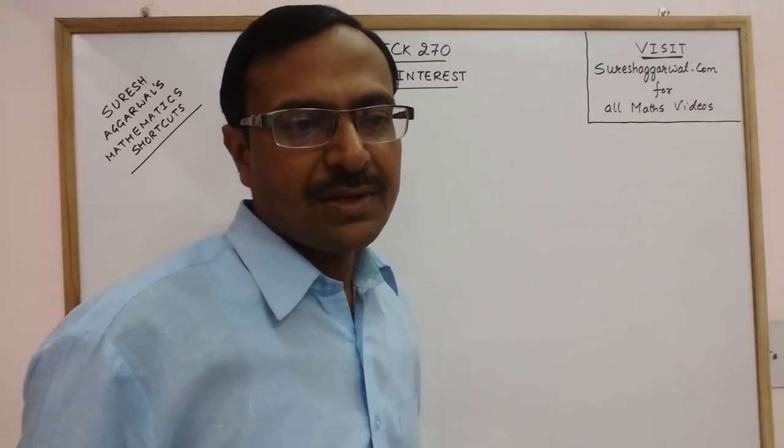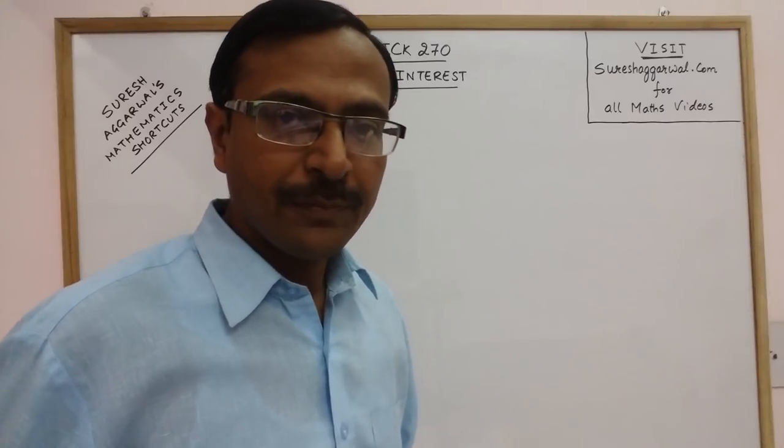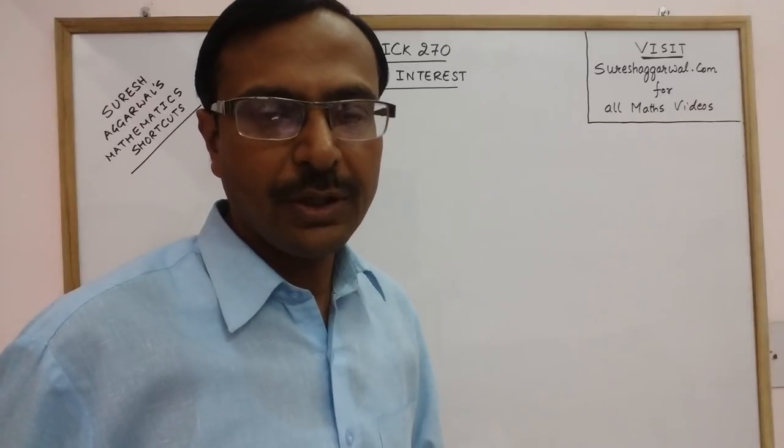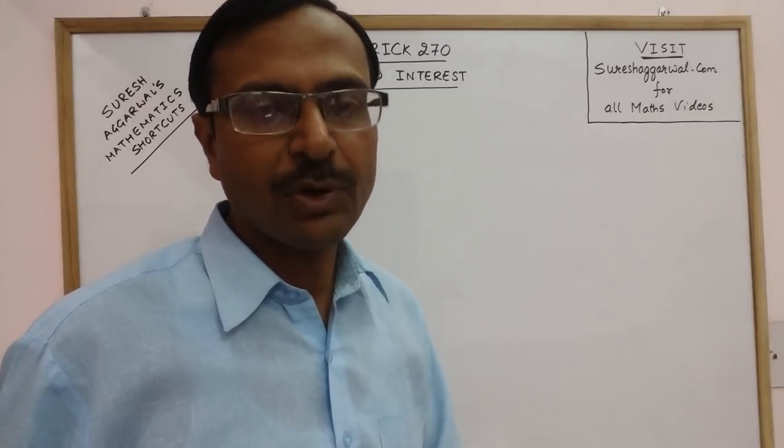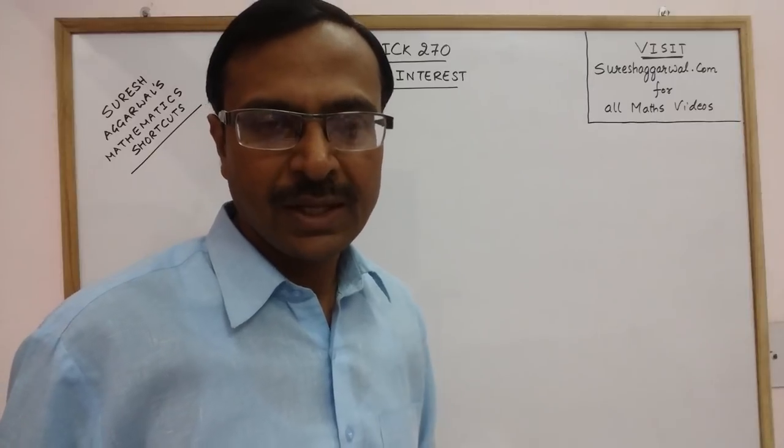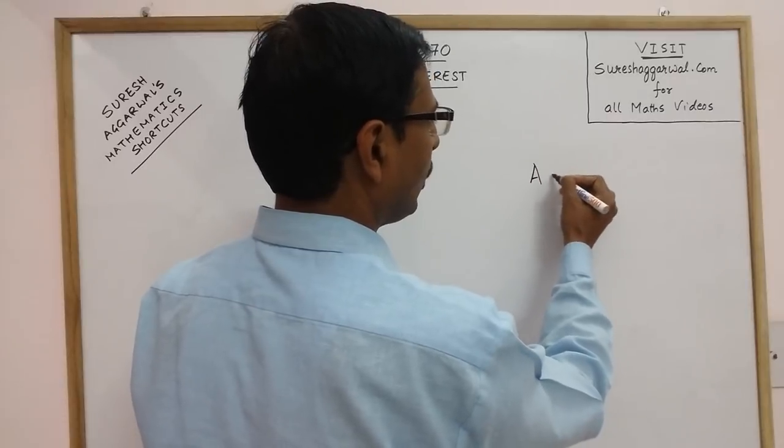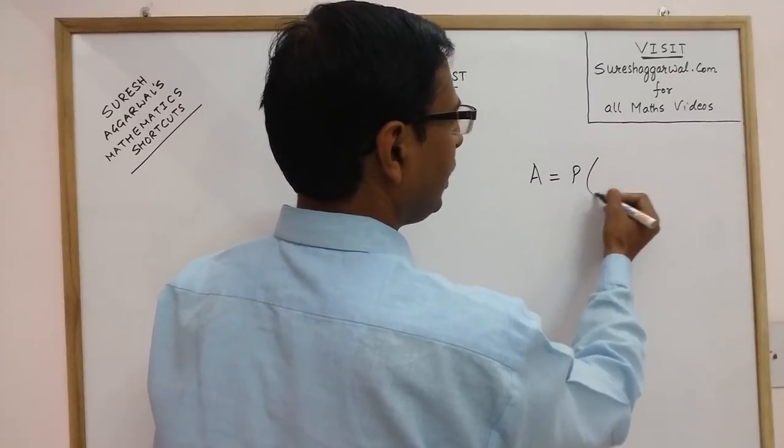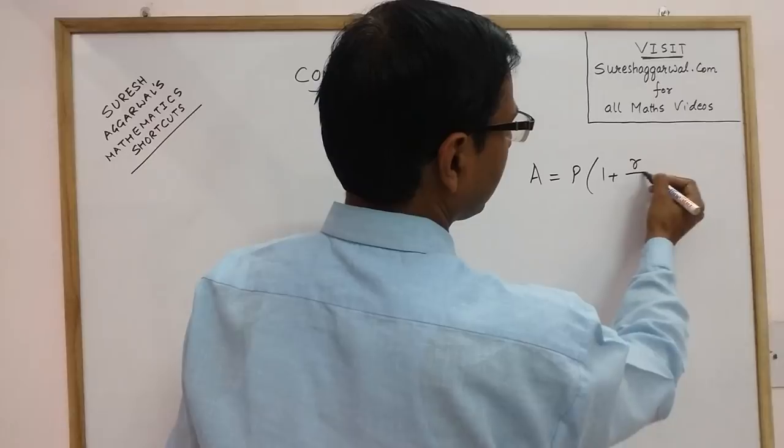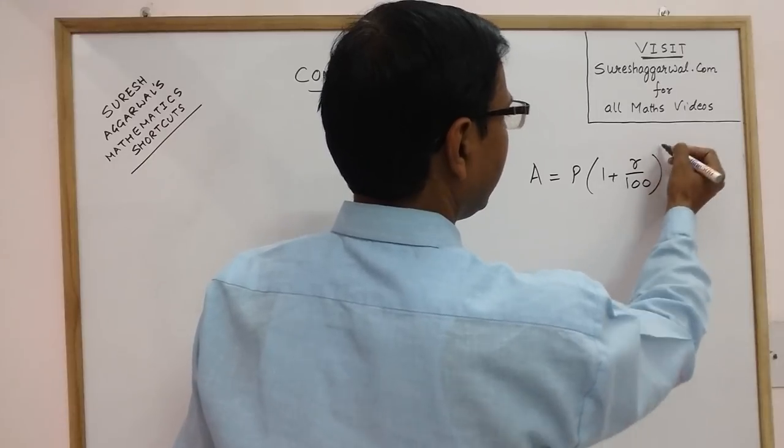So this is a particular type of problem and you need to know the shortcut in order to solve problems related to this important concept of compound interest. Now see what is the concept? We all know that the formula for finding the amount is P into 1 plus R upon 100 raised to power n.